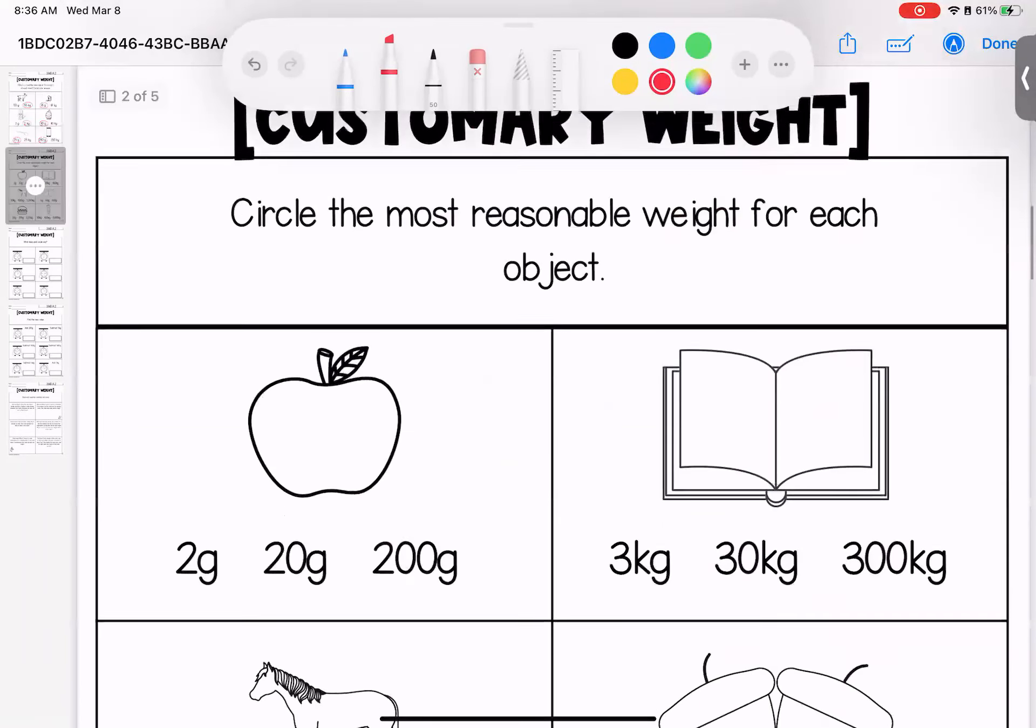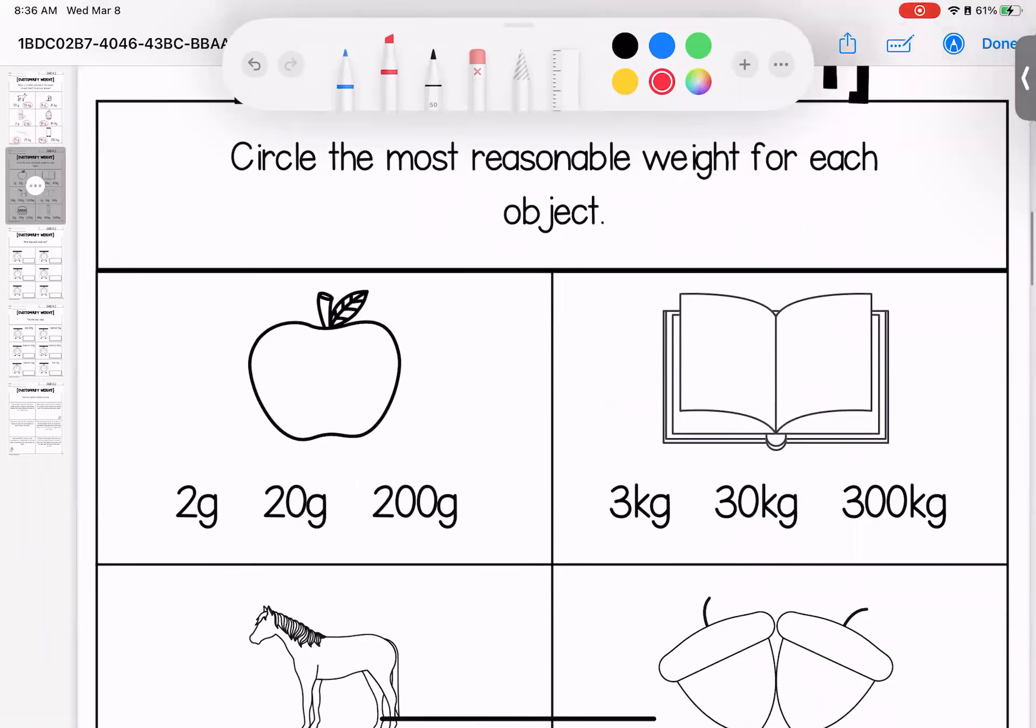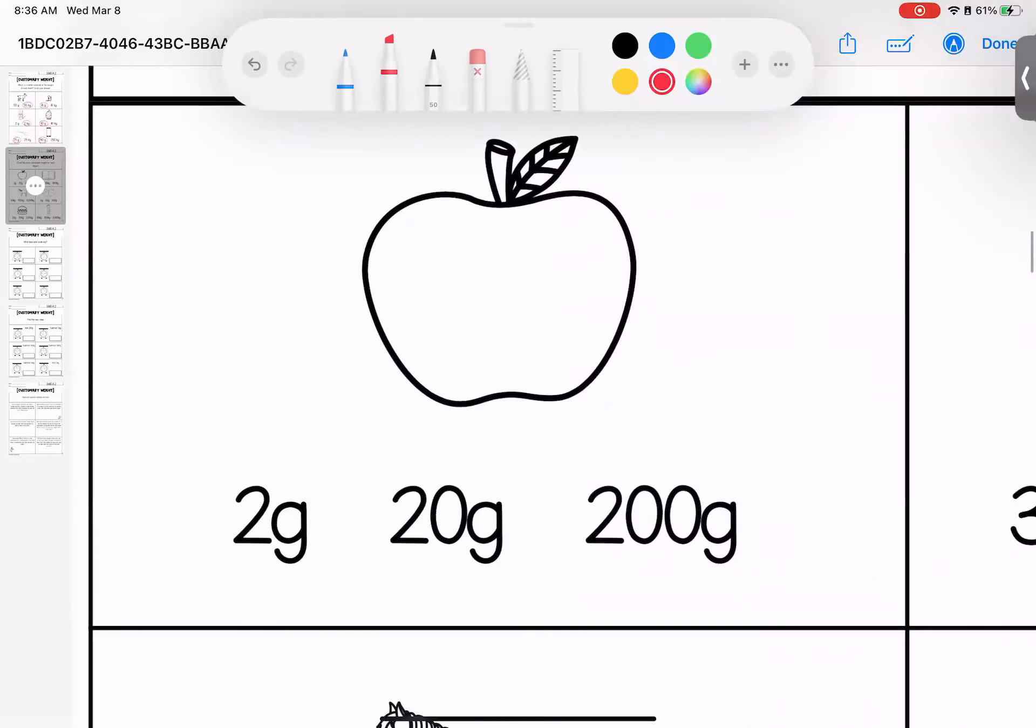All right, on to our next page where again we are talking about a reasonable or estimated weight. Just as a reminder, grams, we use the mental image of a paperclip. And for kilograms, we're thinking about pineapples. So would it make sense for an apple to be the weight of two paperclips, 20 or 200? 20 grams is the most reasonable answer.